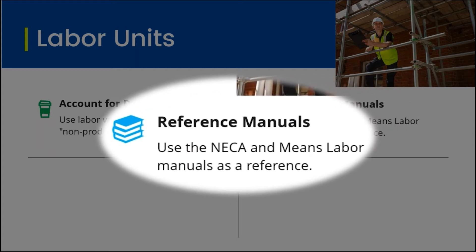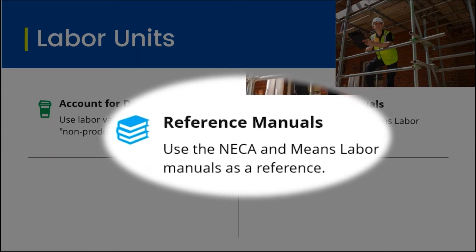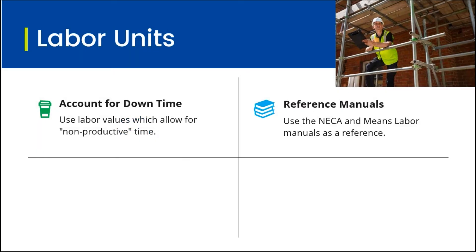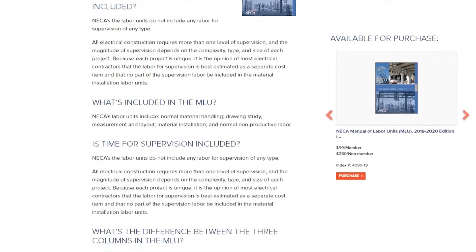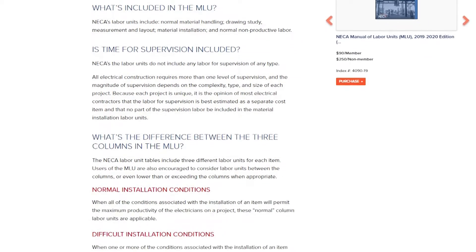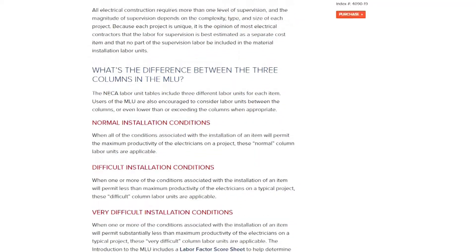Two resources available for labor units are the NECA labor manual — the National Electrical Contractors Association; you don't have to be a NECA member to purchase it, you can go online, and they update it every two years with adjustments and new products. The Means labor manual is also available, covering most trades — electrical, mechanical, plumbing, carpentry, and others. Do you use those for bidding? Probably not. But as a reference? Absolutely. For change orders? Absolutely.